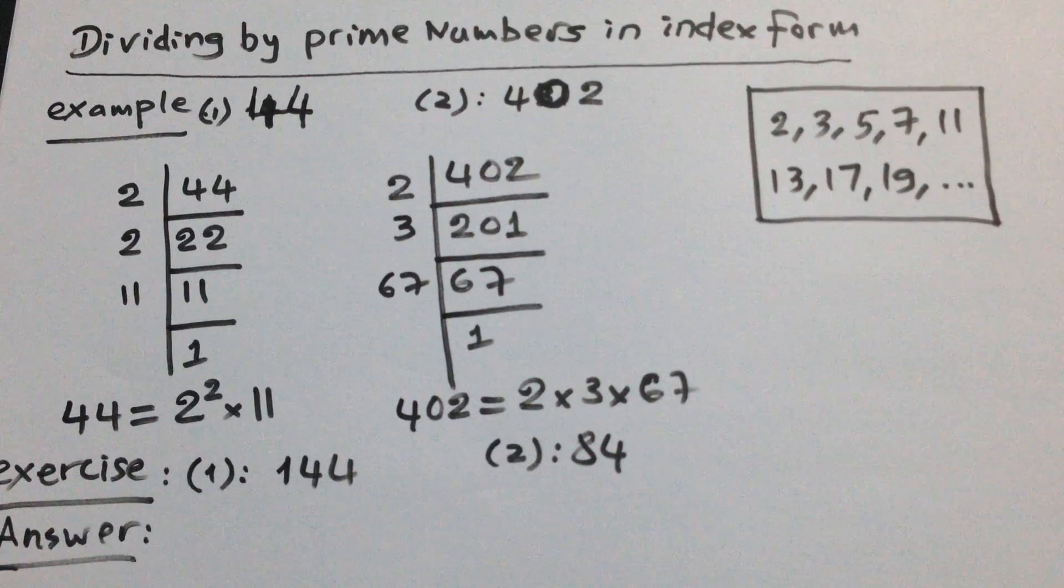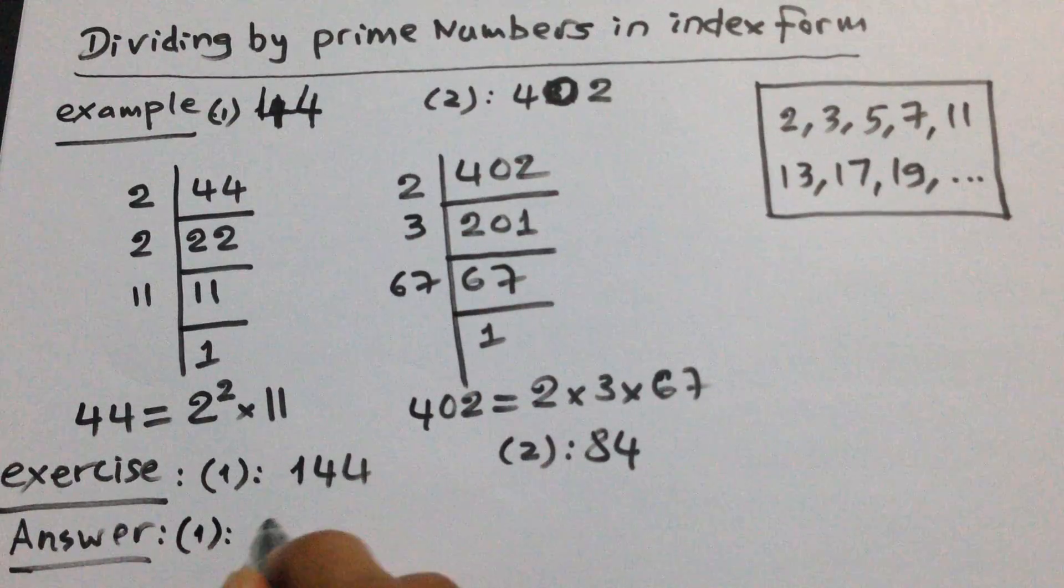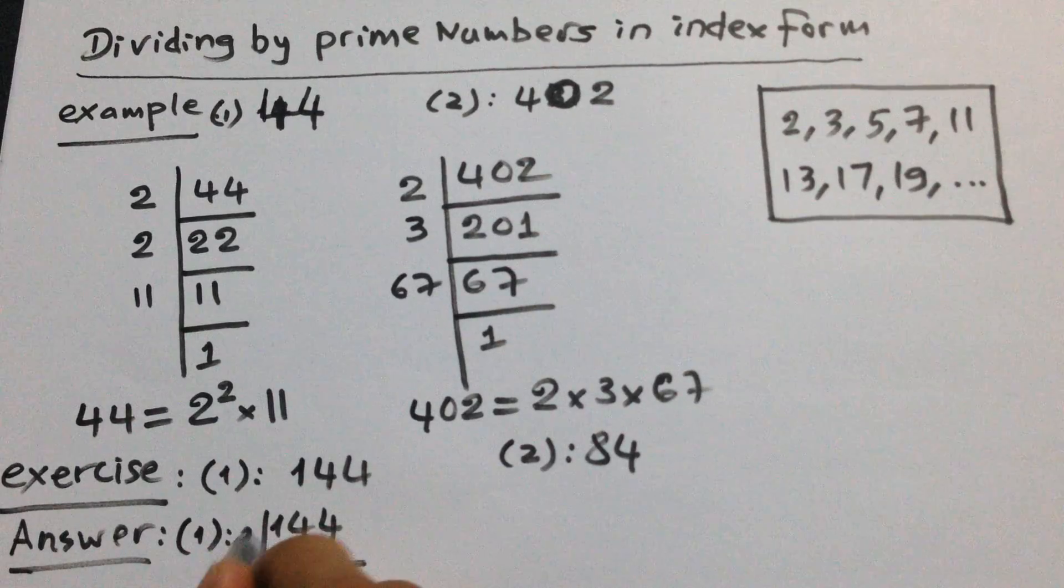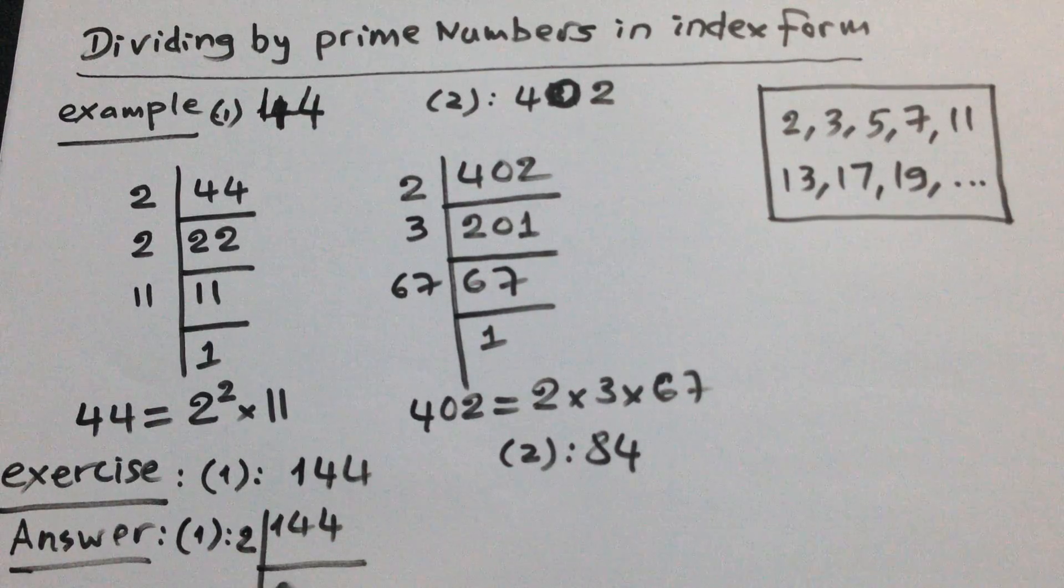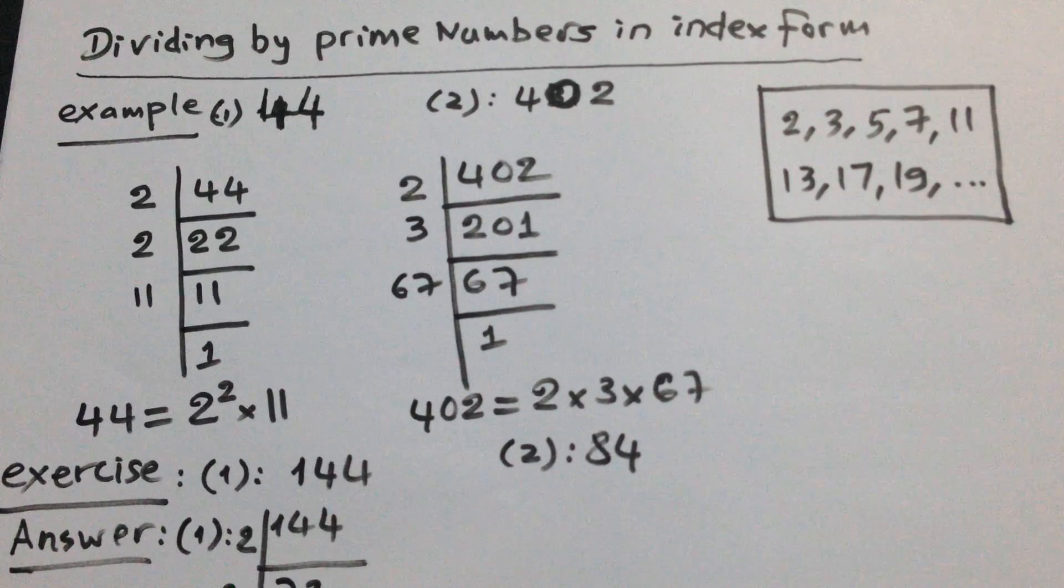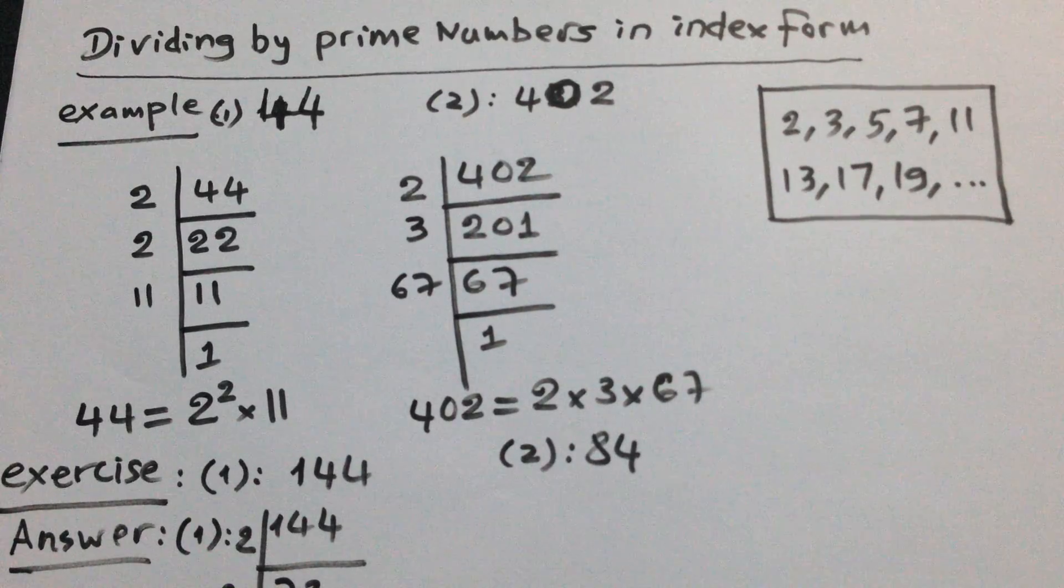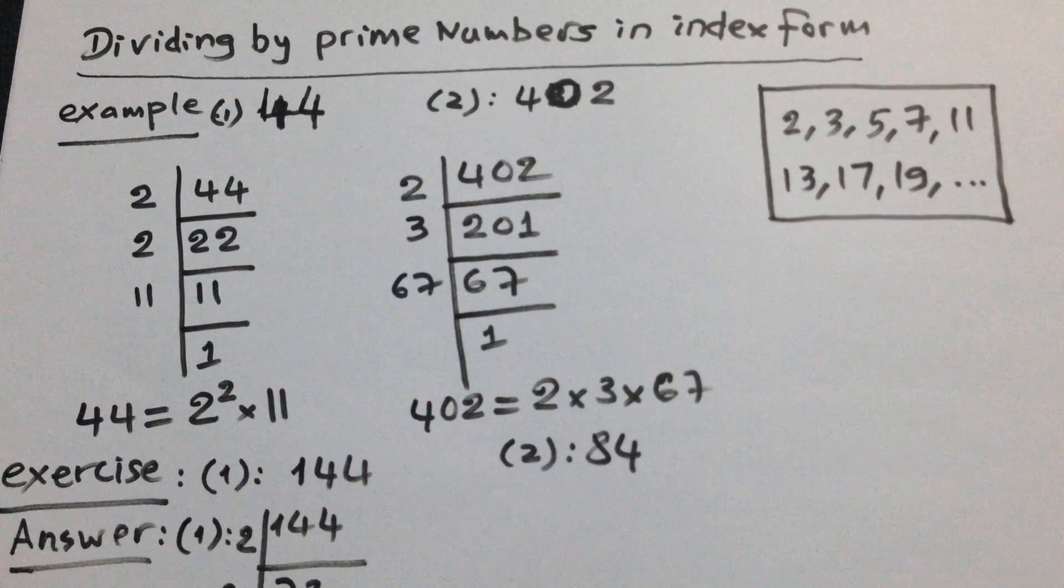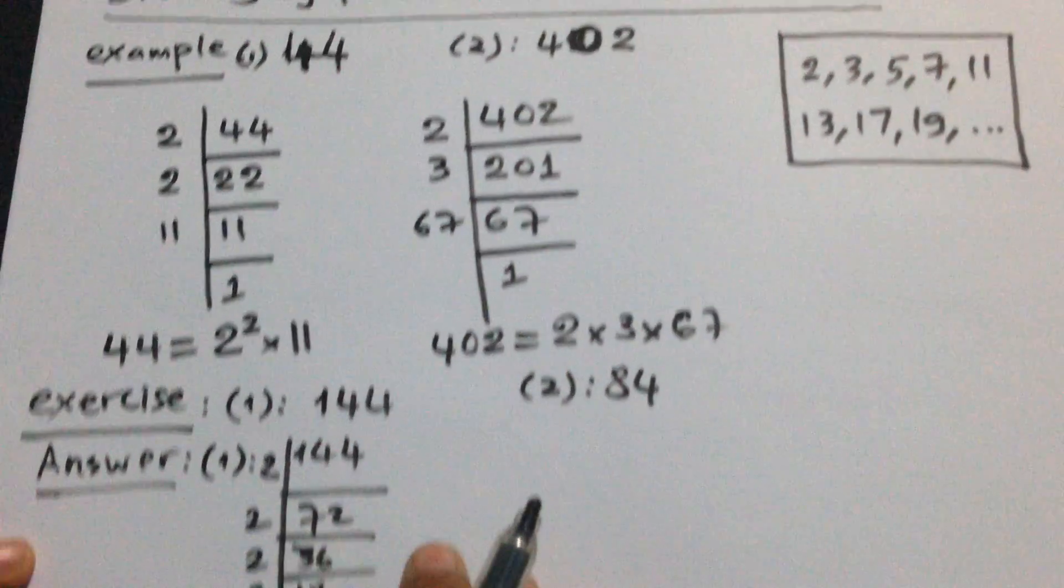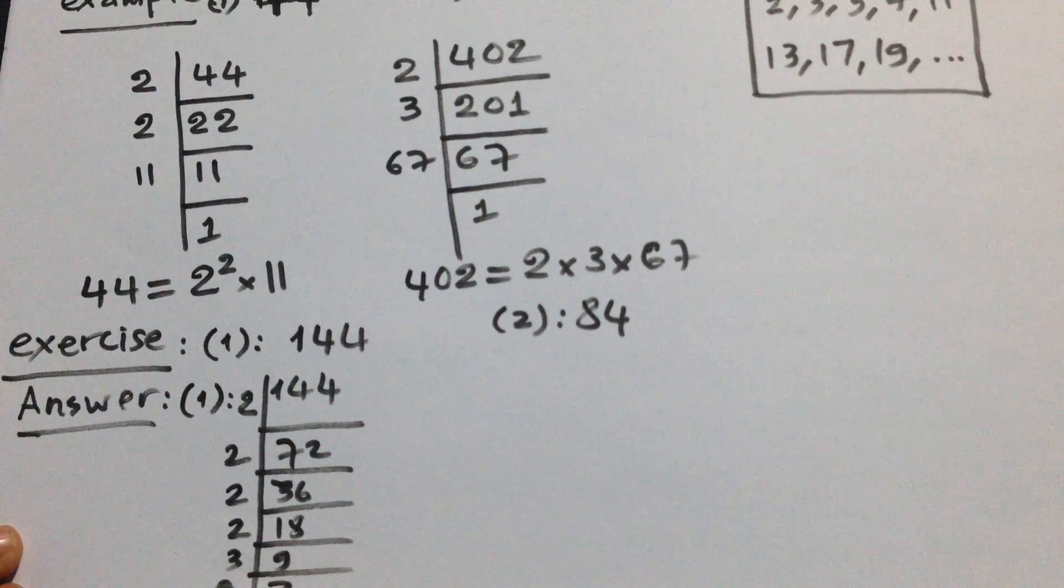We have 144. 144 can divide by 2, equal 72. Divide by 2, 36. Can divide by 2, 18. Divide by 2, 9. Equal 3. 3 equal to 3, okay, 1.